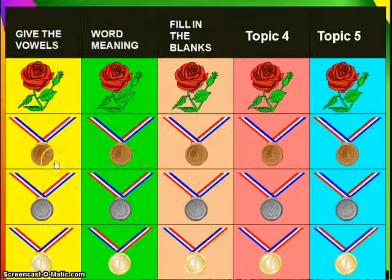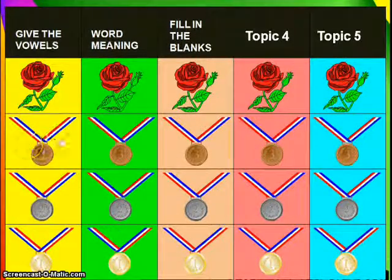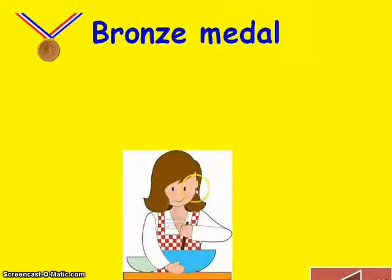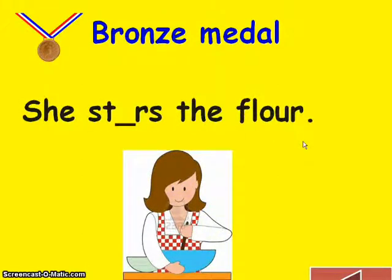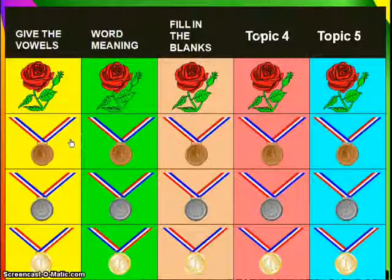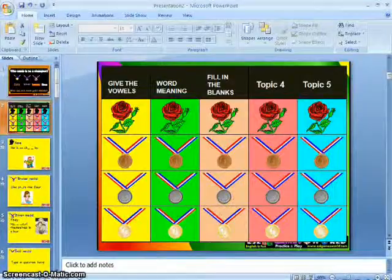I'm directed back to the category slide. So just do the same things — now we have to click on the bronze medal. There's a woman in the photo and the question is 'She blanked the flower.' As you can see in the photo, the girl is staring at something, so the correct answer is 'stares.' If the student got it correctly again, praise them and go back to the category and do the same thing. And that's how you use this ESL game. I hope you'll enjoy it.